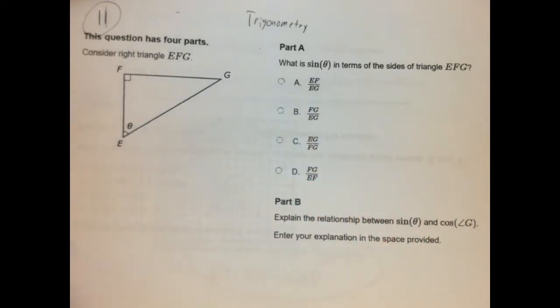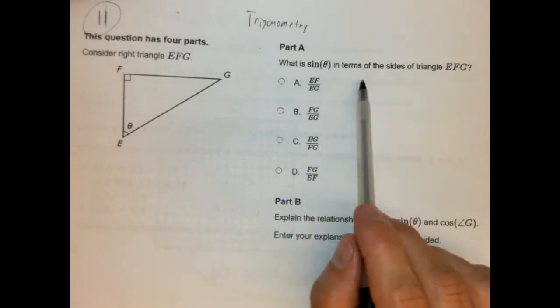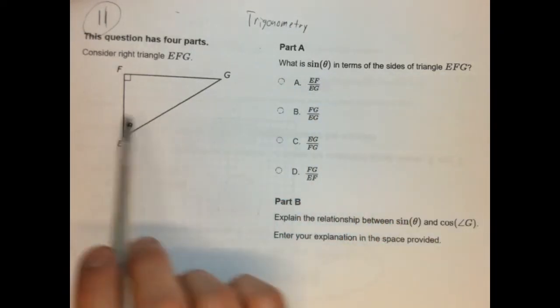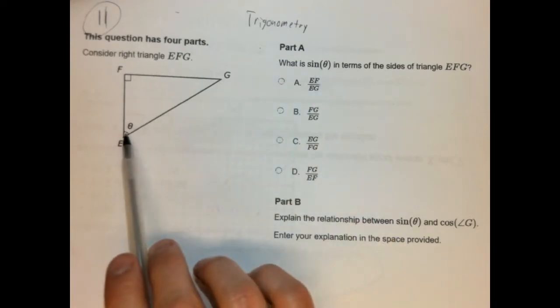And they have added trigonometric ratios to that right underneath the right triangles. They give a Pythagorean theorem, and they give you trigonometric ratios. That was not on the previous reference sheet back in the original version of the MCAS. And that does matter with this problem. Okay, so the first part asks, what is sine of theta in terms of the sides of triangle EFG? So theta's here. Sine of theta's here.